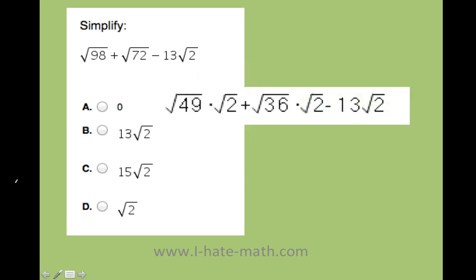Remember, we have square root of 49 times 2 which is the same as 98. Square root of 36 times square root of 2 which is 72, and I cannot do anything with this guy, so I'm just going to leave it by itself.